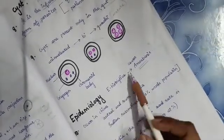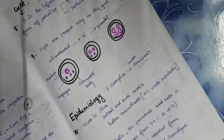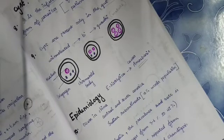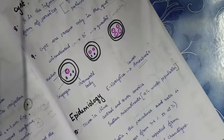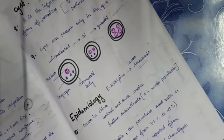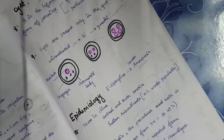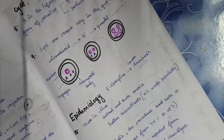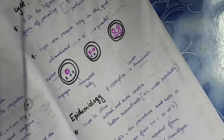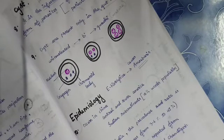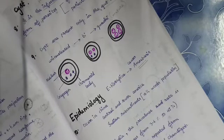ETA causes amoebiasis in the patient who is infected with ETA. It occurs in China, Central and South America, in Indian subcontinent. 10 percent of people is affected with amoebiasis. In India, the prevalence rate is around 3.6 to 4.7.